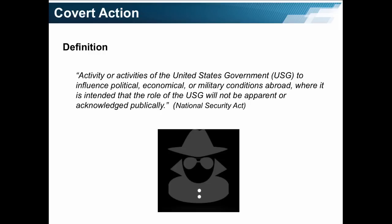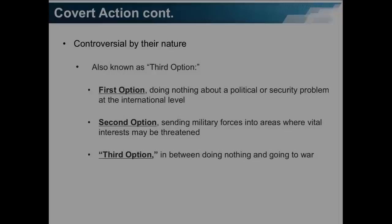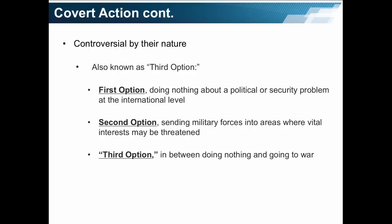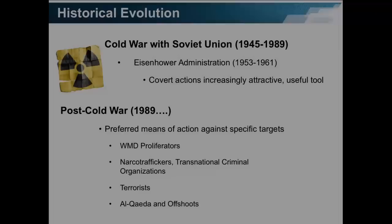The National Security Act defines covert action as an activity or activities of the United States government to influence political, economic, or military conditions abroad, where it is intended that the role of the U.S. government will not be apparent or acknowledged publicly. Covert actions are controversial by their nature. They are also known as the third option. The first option is doing nothing about a political or security problem at the international level. The second option is sending military forces into areas where vital interests of the U.S. may be threatened. The third option is in between doing nothing and going to war.